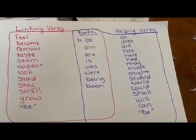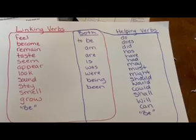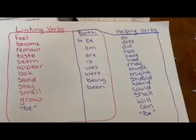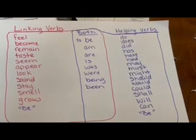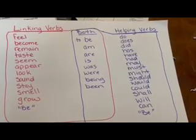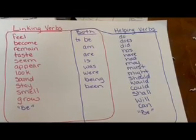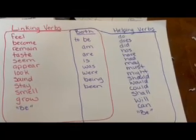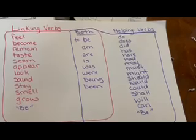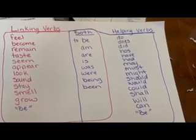A linking verb makes an assertion by joining two words. Feel, become, remain, taste, seem, appear, look, sound, stay, smell, grow, be. These are the linking verbs.